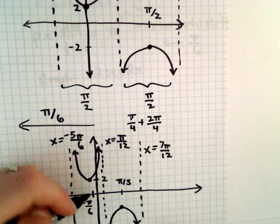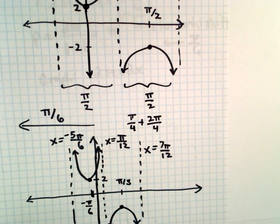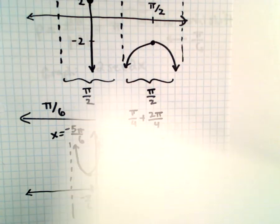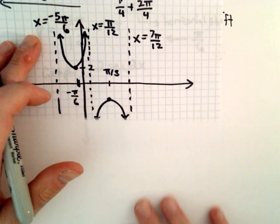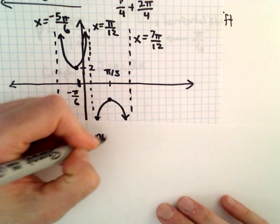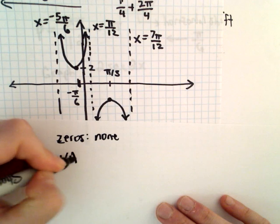And if you want to find the zeros, well, in this case, it's not going to cross the x-axis, so there are no zeros. So, for the zeros, there are none.